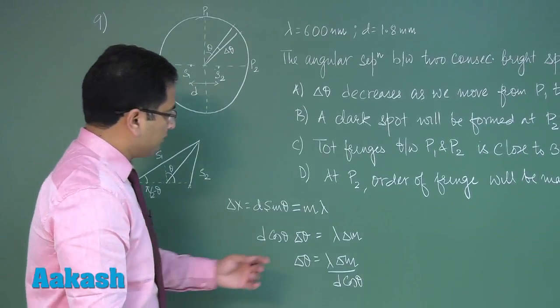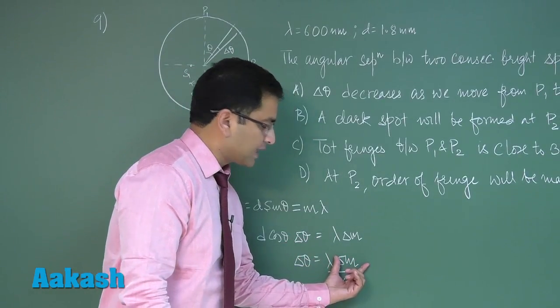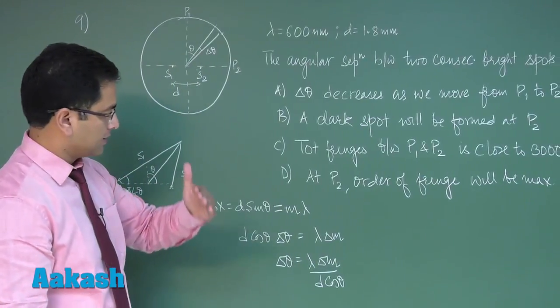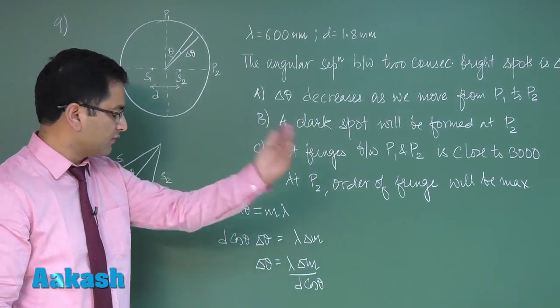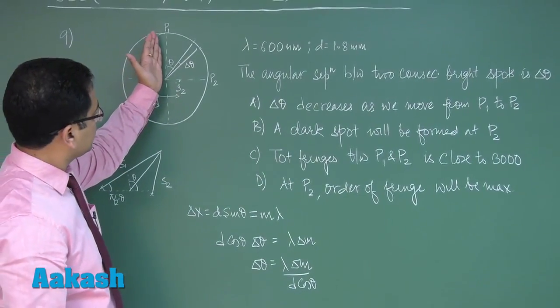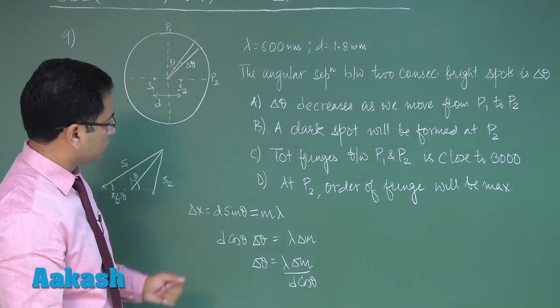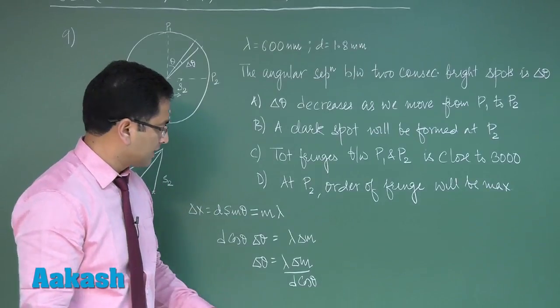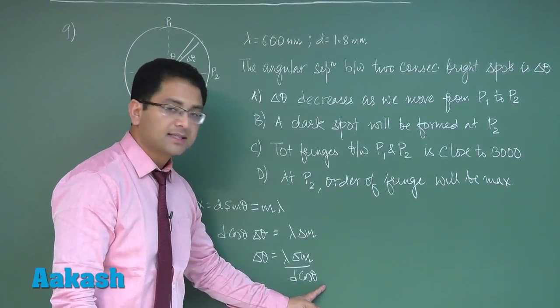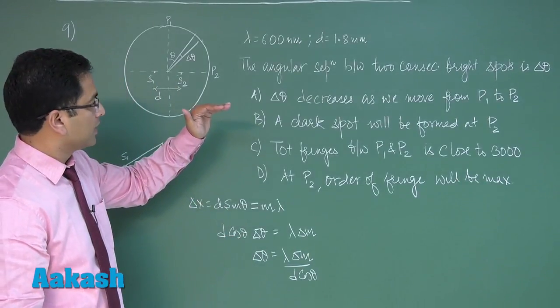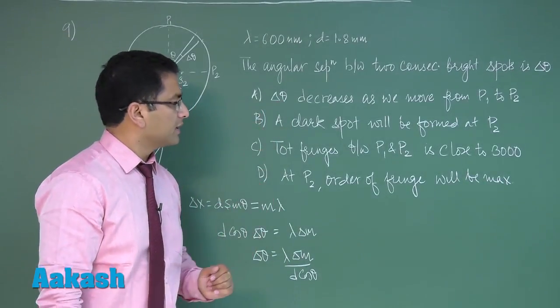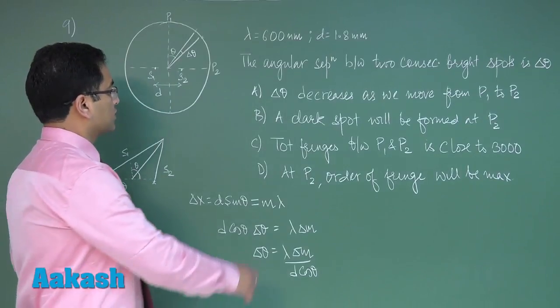Now here you can see Lambda M, or Delta M more precisely, would be one because that's the discrete step between the first and second or third and fourth. Now as we go from P1 to P2, Theta increases, so cos Theta would decrease. And if cos Theta decreases, Delta Theta would increase. However, the option is talking about decrease, so option A would be invalid.